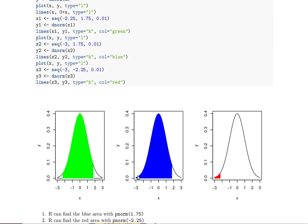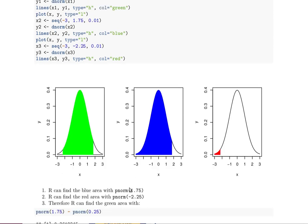The things that we can find real easily with R is this blue area because it would just be the pnorm of 1.75. We could also find this red area which is the pnorm of negative 2.25.